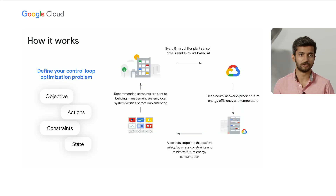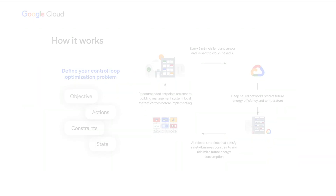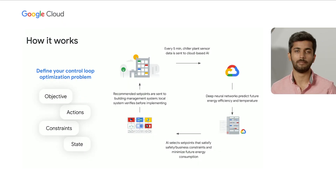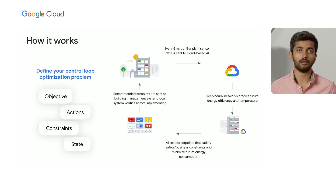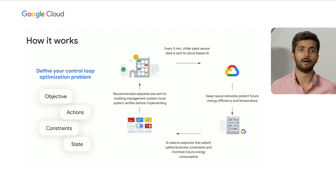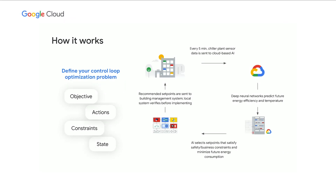And how does that work? The first step is that you define your control loop optimization problem in the template shown here. You define your objective function, which might be minimizing your energy usage over the next few hours, or reducing the batch time required to produce one batch of chemicals. Next, you make available actions to the AI agent that it can take to realize that objective — typically this takes the form of setting various set point values on your pieces of equipment. Next up, we have the constraints: these are the safety and business rules that the AI must abide by in order to operate your plant safely. And finally, you have the state — all the sensor data that tells the AI how the plant is currently performing.